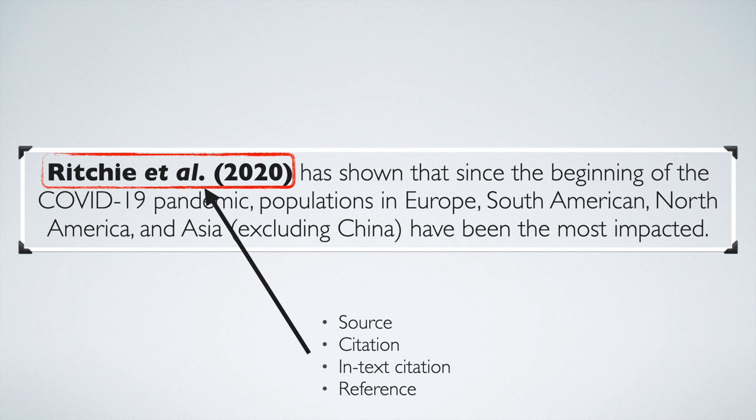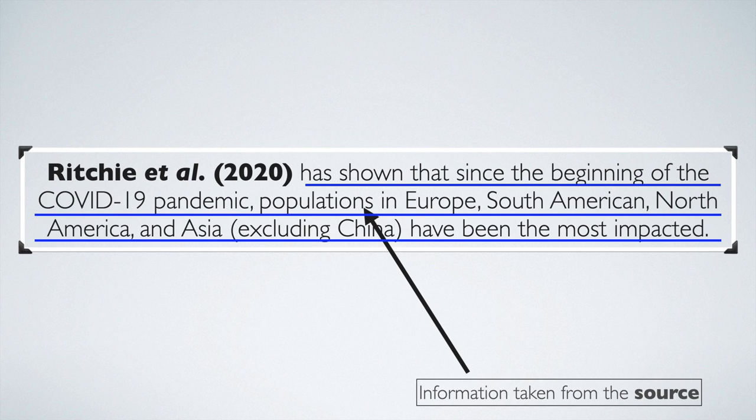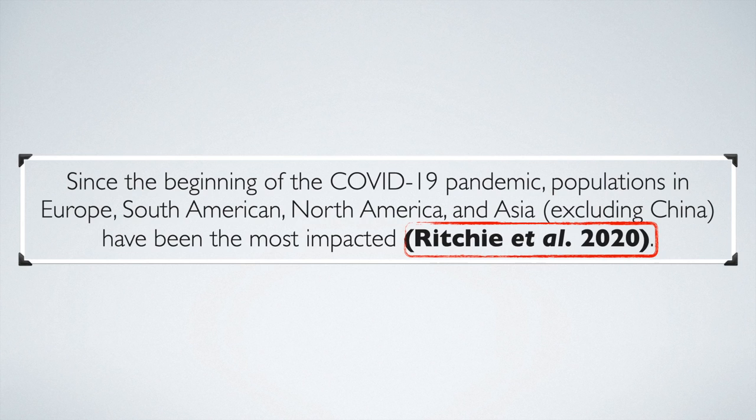What follows the in-text citation is the information taken from that source. If you wish, you can also add the in-text citation after the information taken from the source.